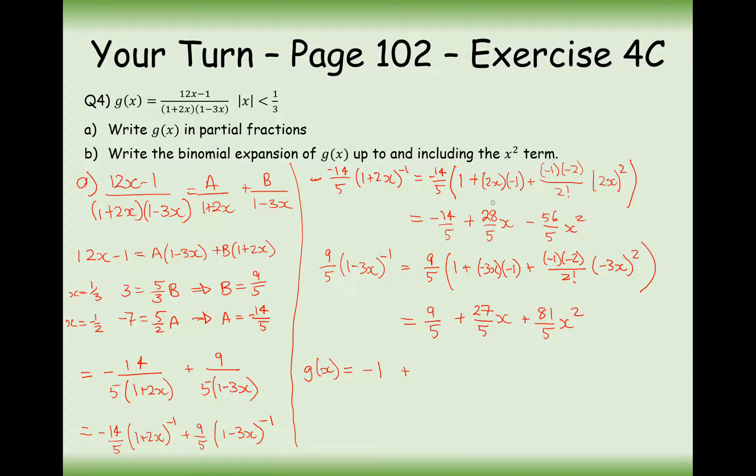Now the next term here is going to be 27 add 28, which gives us 55. 55 over 5 is 11, so it's going to be 11x. And in the last case here, it's going to be 81 minus 56 all over 5. That's 25 over 5, so that's going to be plus 5x squared.